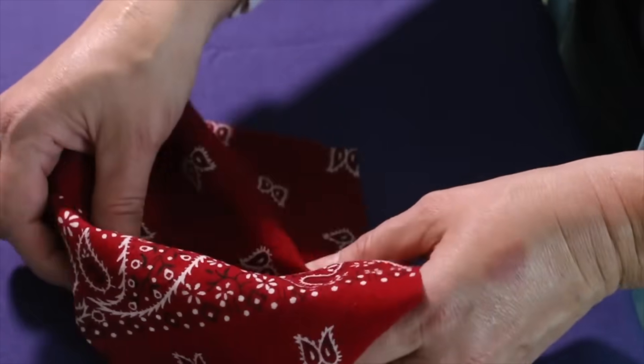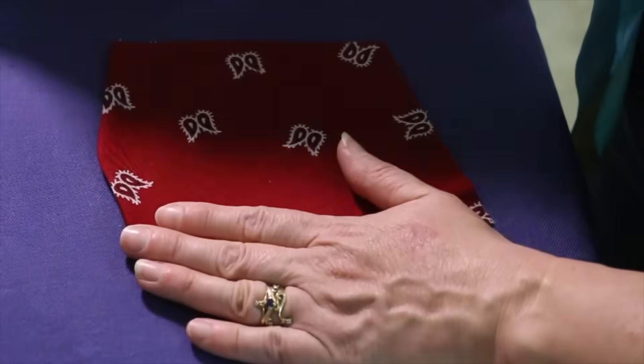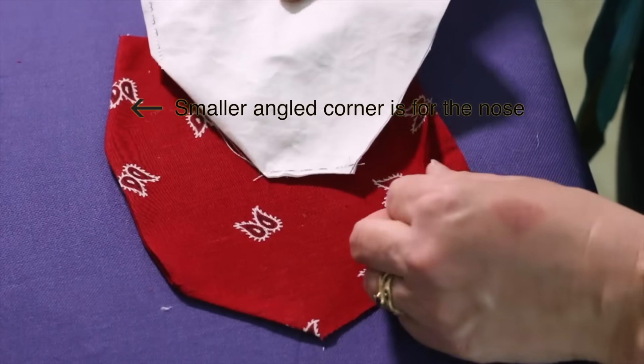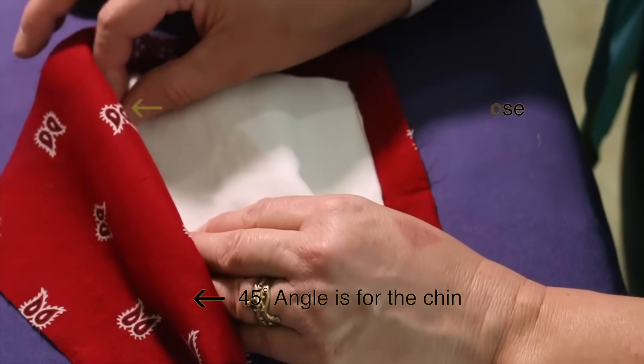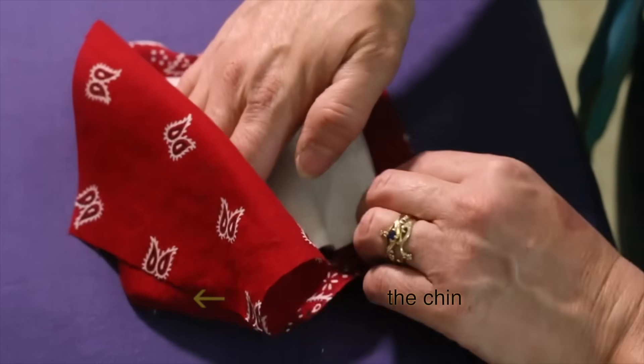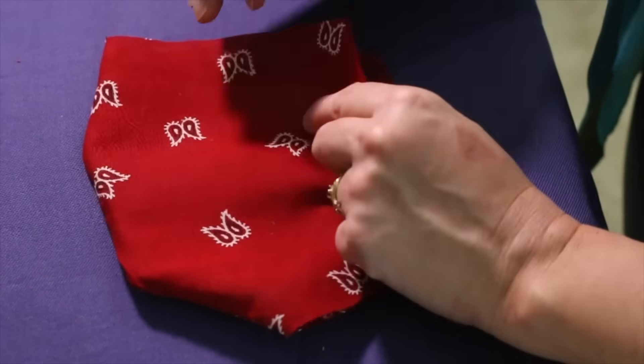Turn your outside mask material right sides out and press it with the iron. Now lay the liner on top of the mask, making sure that the angled corners match for the nose and chin. Insert the liner fabric into the outside material and align the points and angles. Then center the liner so there is an equal border of outside material around it.